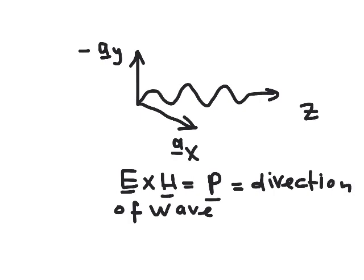To summarize: we have a magnetic field in the +x direction and an electric field in the −y direction, both traveling in the +z direction at the speed of light (3×10⁸ m/s). The ratio of their amplitudes is 120π or 377 ohms. Taking the cross product E × H gives the direction of wave propagation — this is the Poynting vector. The electric field, magnetic field, and direction of propagation are all mutually orthogonal.